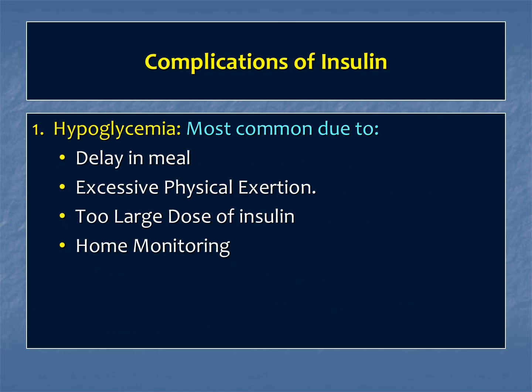Now the complications of insulin. The first and most common is hypoglycemia. This is due to either delaying the meal — since insulin is given 15 to 30 or 45 minutes before eating — or excessive physical exertion causing increased glucose utilization without a corresponding dose adjustment, or accidentally giving too large a dose of insulin.